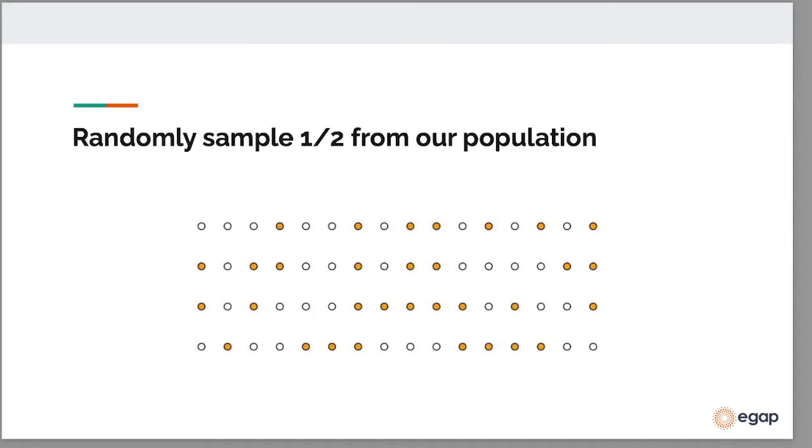This probability doesn't have to be one half, and you can think of many situations like selecting 50 people out of a population of 500, just 10% for your study.